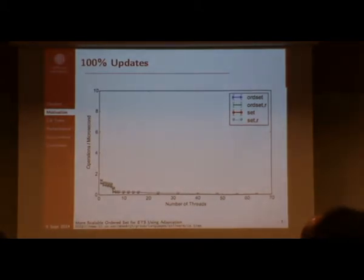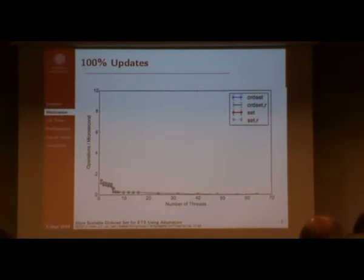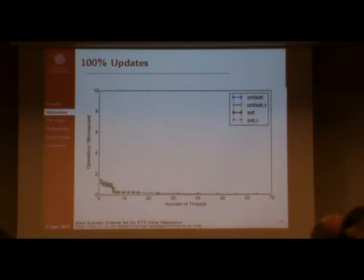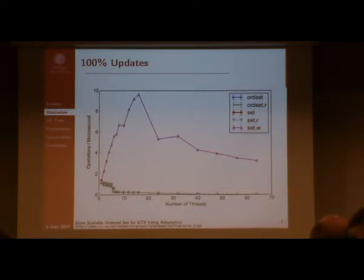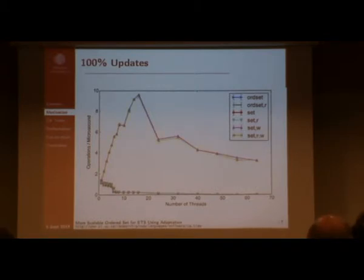We start by looking at the 100% update case. Here we have ordered set with and without read concurrency activated, and set with and without read concurrency activated. Throughput in operations per microsecond is on the y-axis and the number of threads (Erlang schedulers) is on the x-axis. As you can see, this doesn't scale at all. When we add set with fine-grained locking activated, it's much better — but when we use more than one NUMA node, performance gets worse. Activating read concurrency on the set table makes little difference in this case.